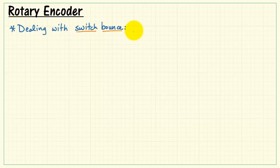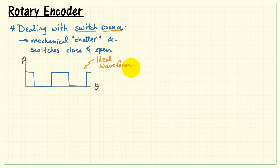Now finally, let's take a look at an important consideration for the interface circuit. So far it seems like the interface is pretty simple with a direct connect, but we need to explicitly deal with the problem of switch bounce. Switch bounce is mechanical chatter as the switches close and open.